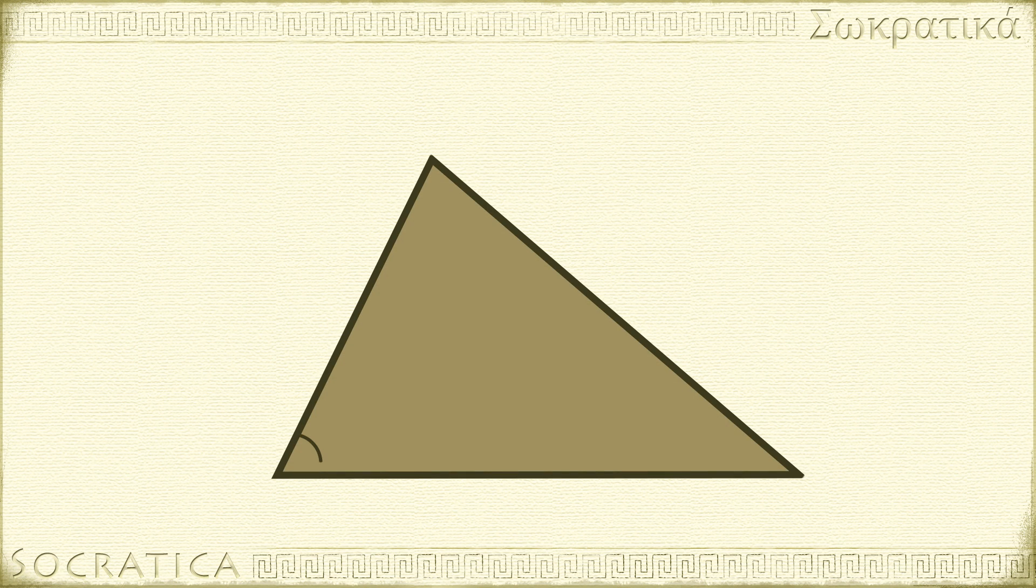A triangle is a shape with three sides and three angles. This makes triangles the simplest kind of polygon.